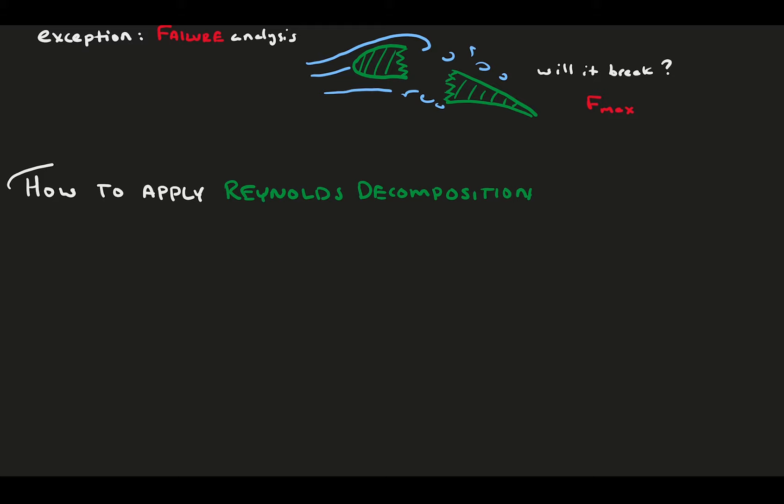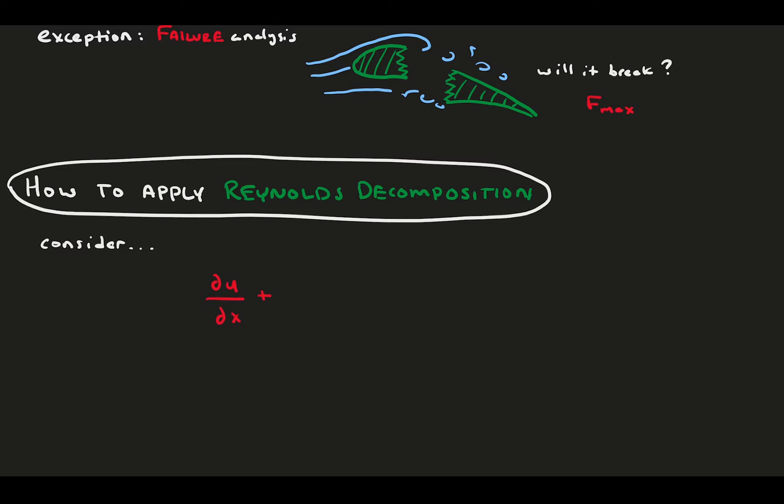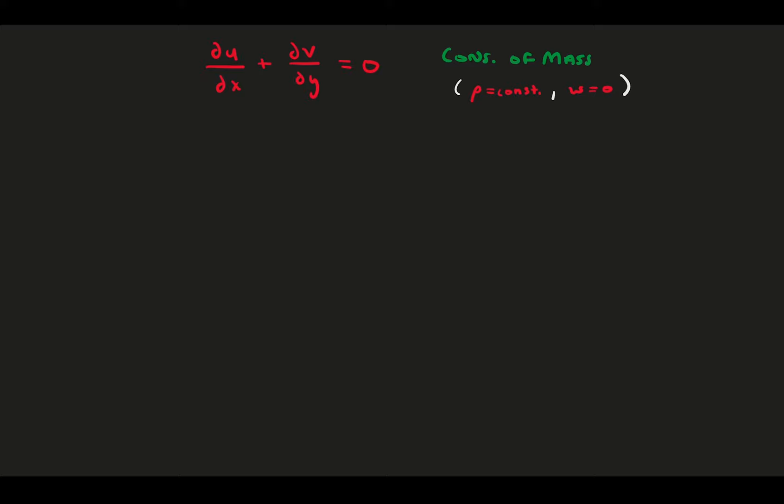Now that we have an understanding of what Reynolds decomposition is and why it's important, let's consider how we apply it to our equations. First, we're going to do some simple examples. Consider a 2D incompressible conservation of mass equation, du dx plus dv dy equals zero. Rho is a constant, and w is zero, so we only get these two terms.